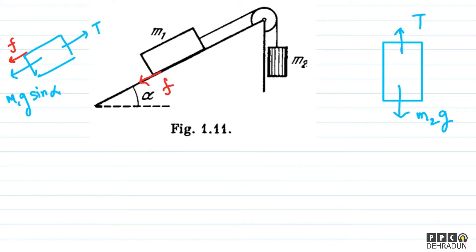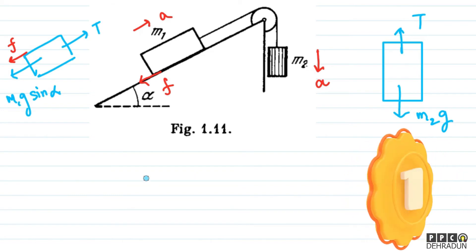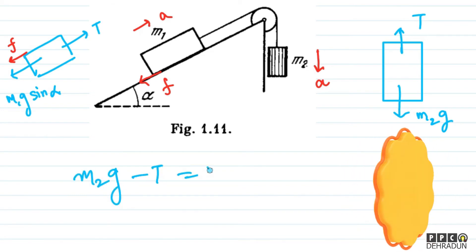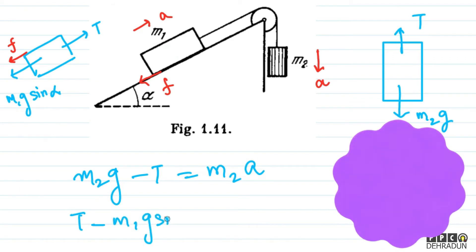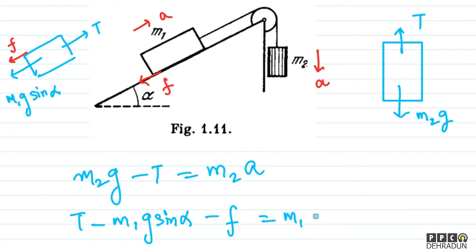Now, if there is acceleration, the direction will be: m2 comes down and m1 goes up the incline. There is also the possibility that friction is sufficient to prevent the blocks from moving. So let's assume the system has acceleration 'a'. We can write two equations: for m2: m2g minus tension equals m2·a. For m1: tension minus m1g·sin(alpha) minus friction equals m1·a. The magnitude of acceleration is the same for both m1 and m2.